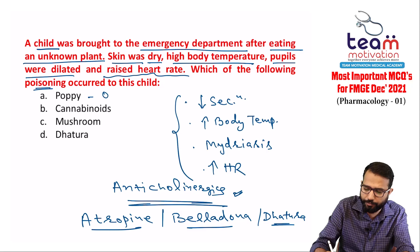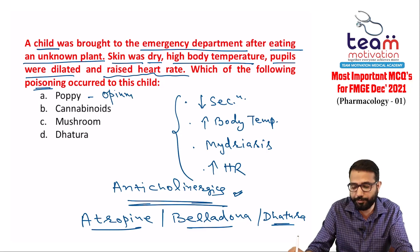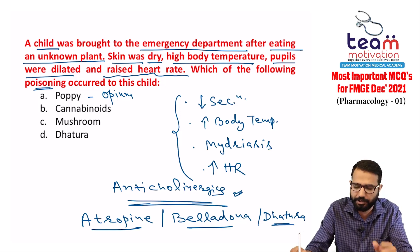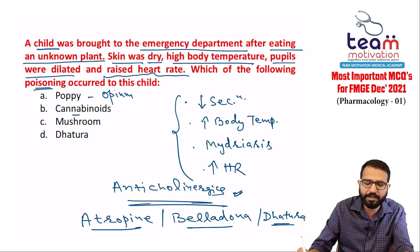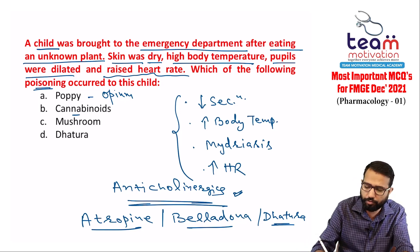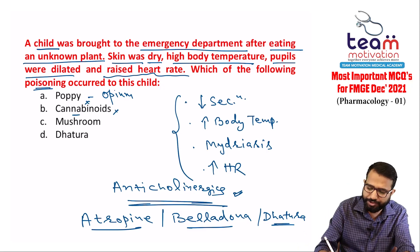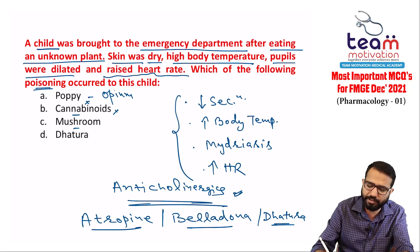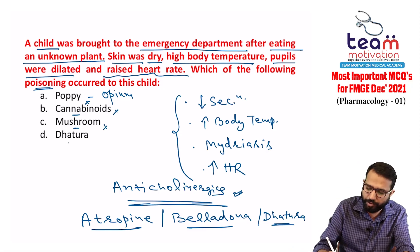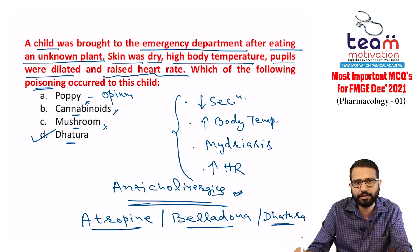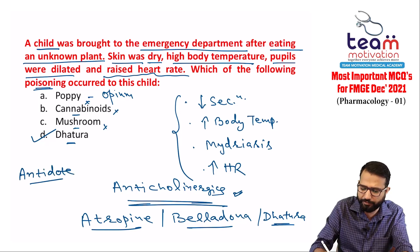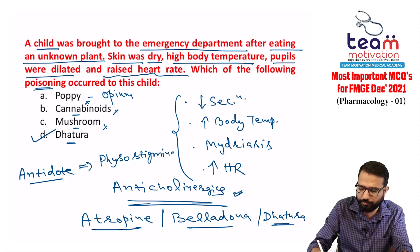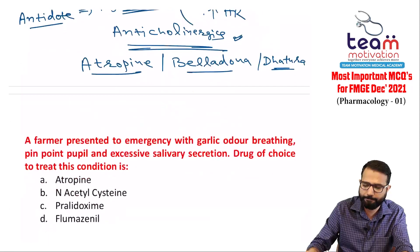Poppy (opium) causes pinpoint pupil, decreased heart rate, and miosis — none of these symptoms match. Cannabis causes euphoria and conjunctival redness. Mushroom is cholinergic — opposite of datura. Datura/belladonna is anticholinergic, matching all the symptoms. Antidote is physostigmine.